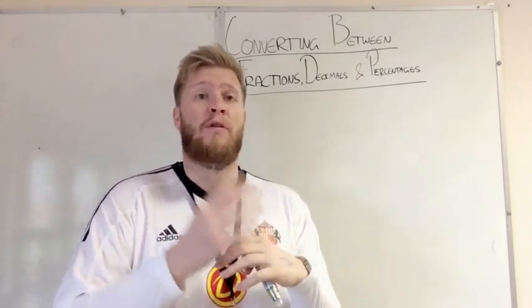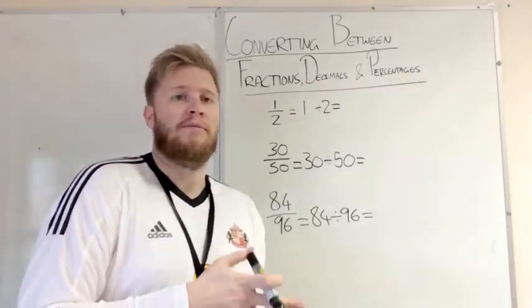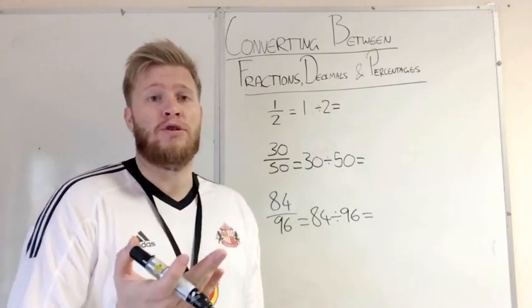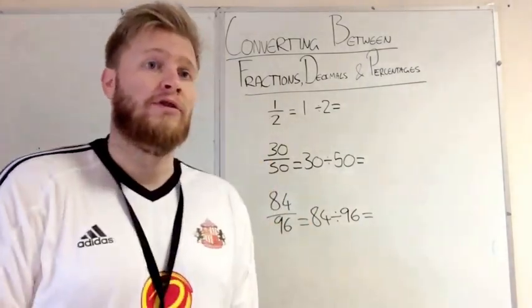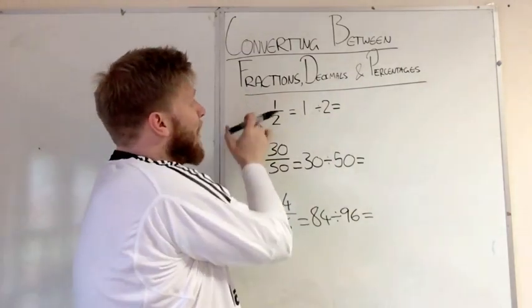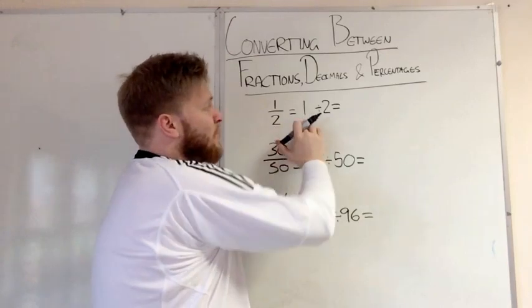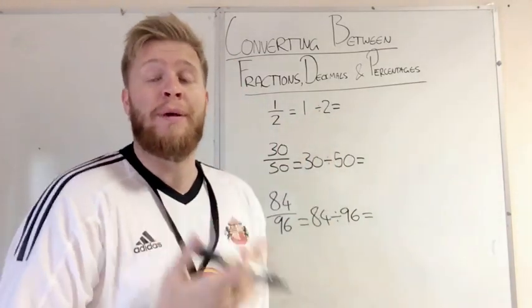First, we're going to look at how to convert from fractions into decimal. So we're looking at fractions to decimals first, and there's quite an easy solution to do it. If you've got a fraction like here, we'll take the top one, we've got a half. All you have to do is divide your numerator by your denominator. So your top number by the bottom number. So in this case, 1 divided by 2, and the answer to that will be your decimal.